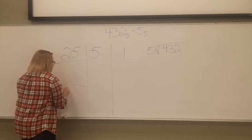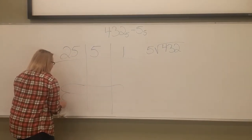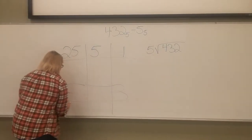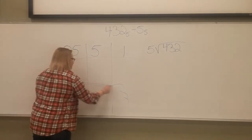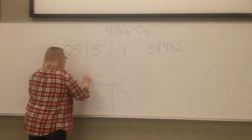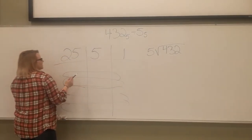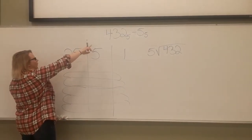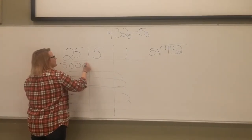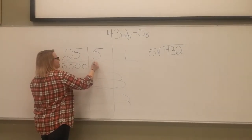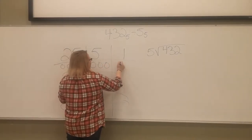So you're going to make your 5 groups down here. You have 4 groups of 25, 3 groups of 5, and 2 groups of 1.